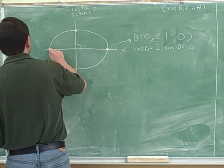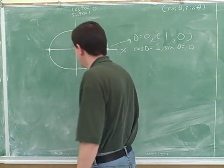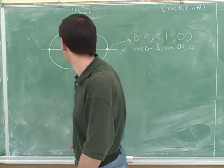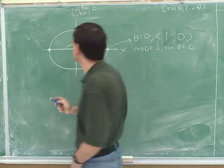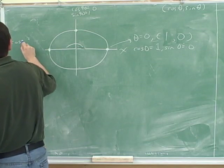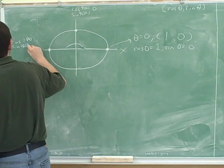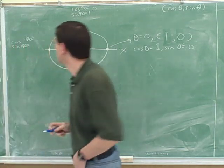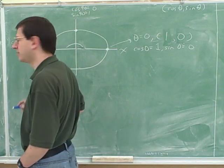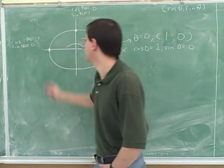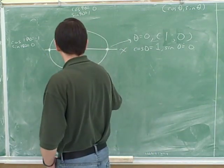What angle does this point represent? 180 degrees — this is an angle of 180 degrees with the positive x-axis. The coordinates are (-1, 0). So the cosine of 180 is negative one, and the sine of 180 is zero, because this point has an x-coordinate of negative one and a y-coordinate of zero.